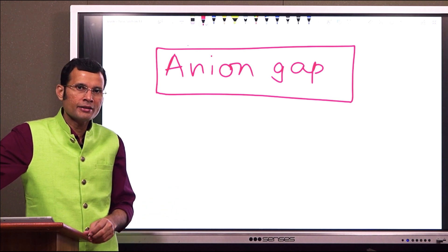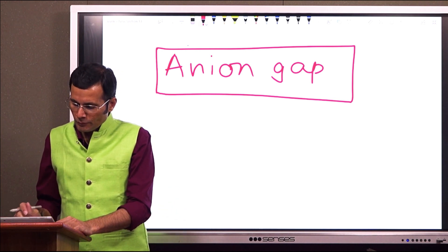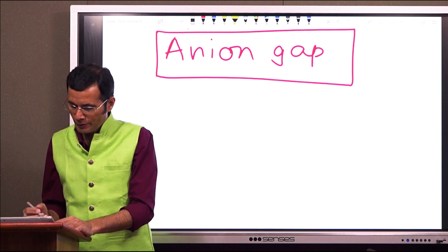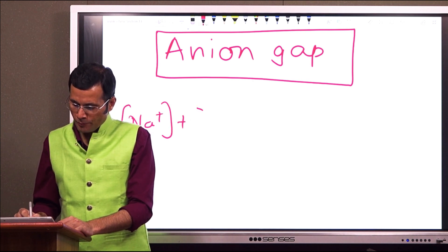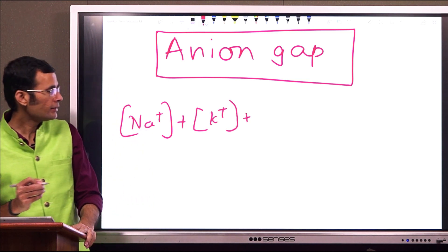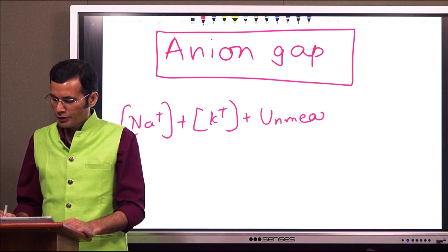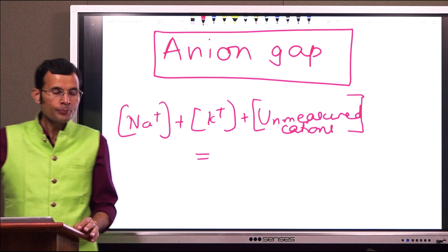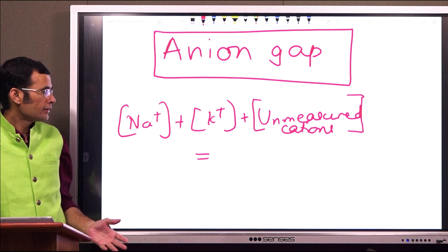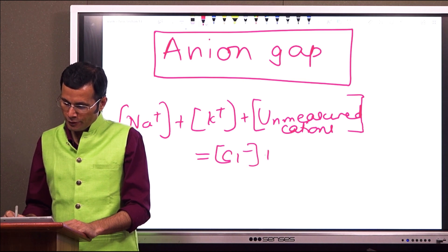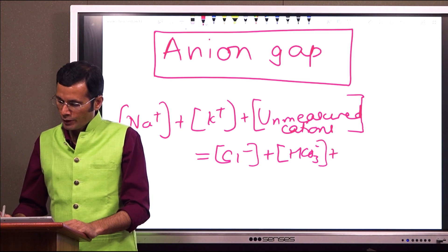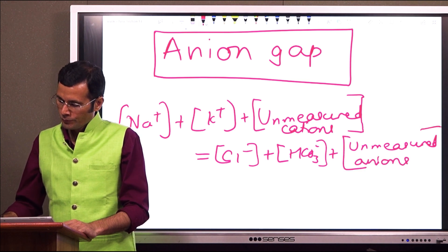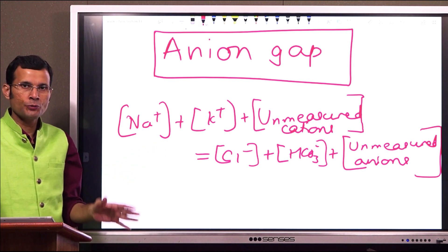The major cations in the serum or plasma are sodium and potassium, plus unmeasured cations. The number of cations should be equal to the major anions in the serum, which are chloride and bicarbonate, plus unmeasured anions. This should be the ideal equation.